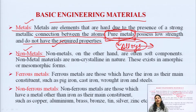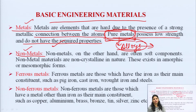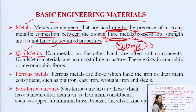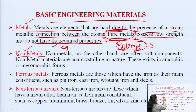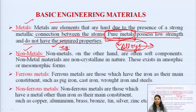Almost all metals remain in solid state at room temperature, but there are exceptions. In the case of mercury, it also comes under metals but remains in liquid state at room temperature. Metals are good conductors of heat and electricity. Examples of metals include silver, copper, gold, and aluminium.